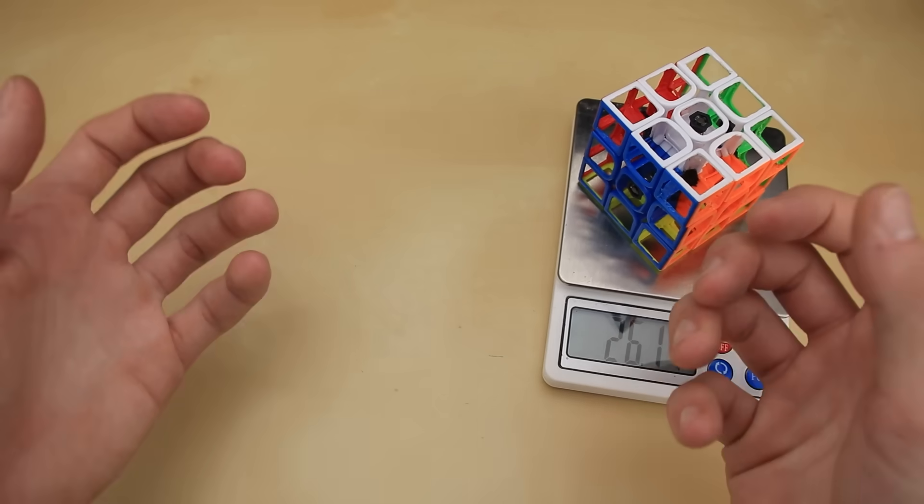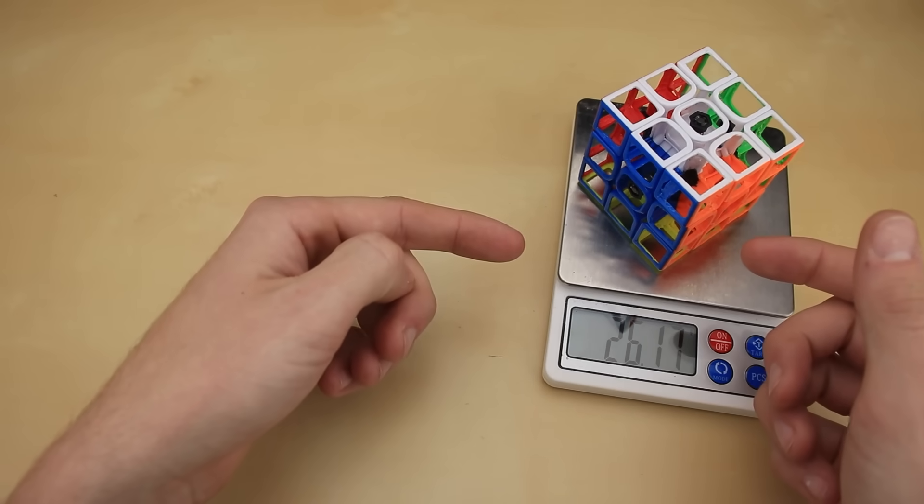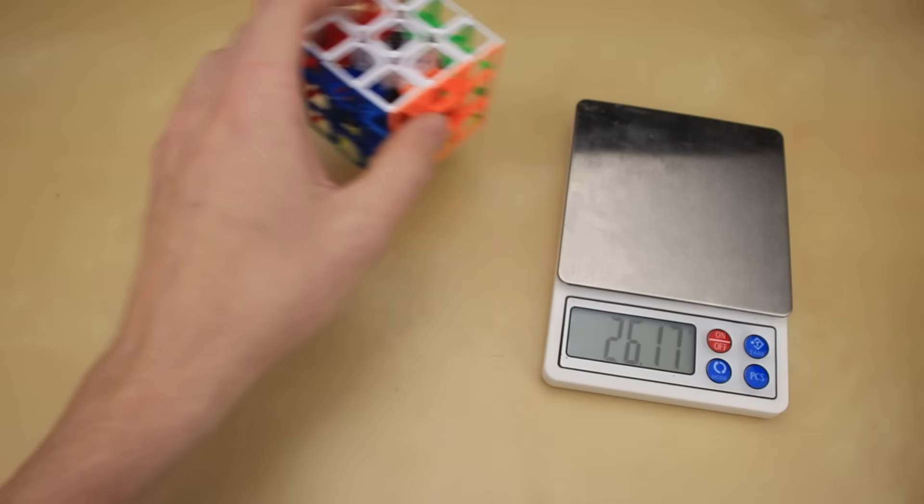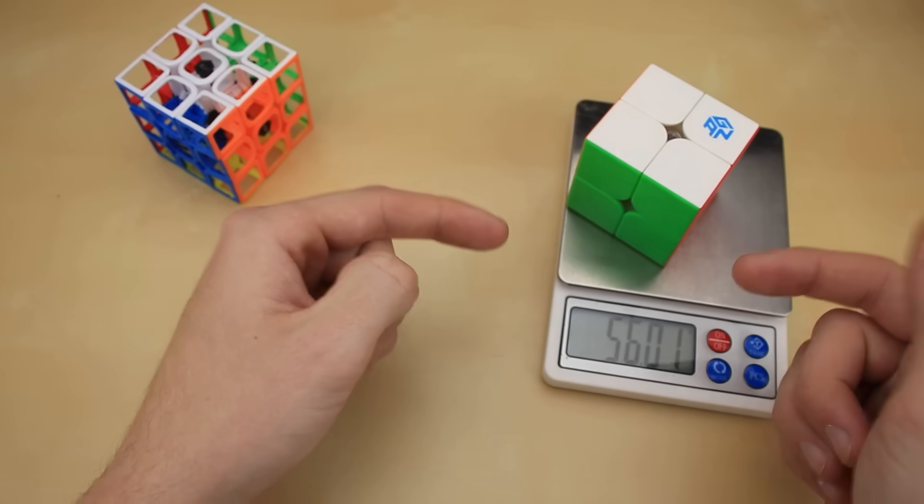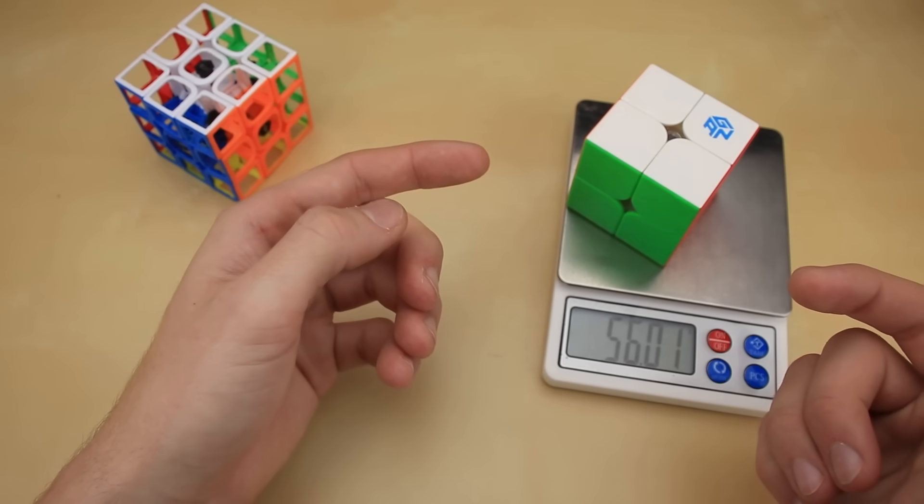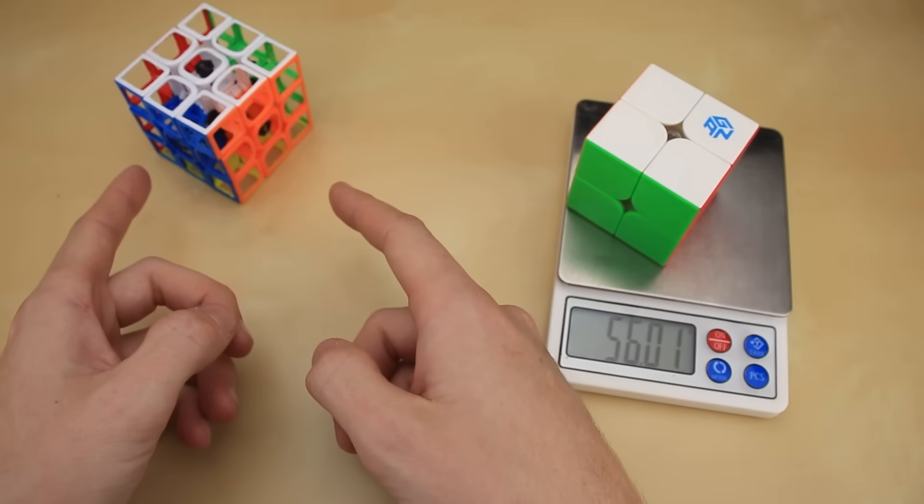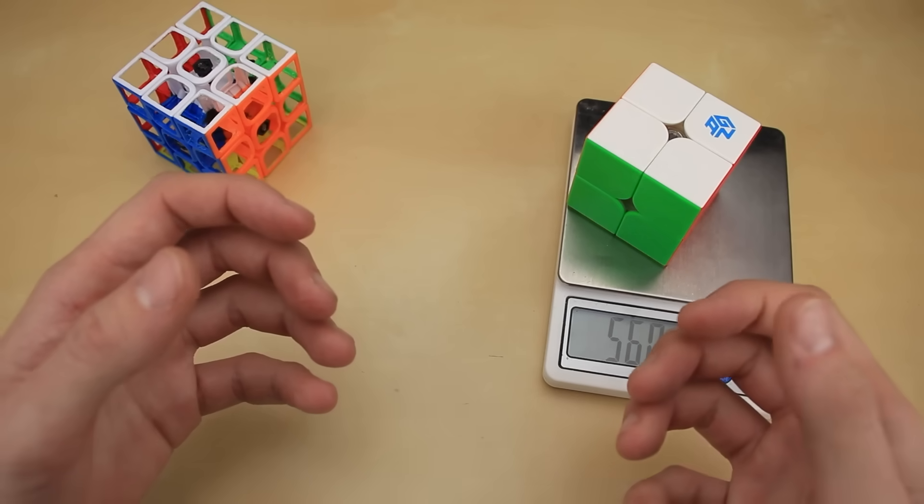Now with those requirements in mind, it got me thinking. If the lightest 3x3 we can make is 26 grams, then what about the lightest 2x2? This is a relatively lightweight 2x2 speed cube from GAN, coming in at just 56 grams. So surely we'd be able to modify this to be under 26 grams, right? Well, maybe, but it's not quite that simple.